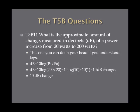What is the approximate change in decibels of a power increase from 20 watts to 200 watts? Using the same formula: dB = 10 × log(P1 / P0), with P0 = 20 W and P1 = 200 W: dB = 10 × log(200/20) = 10 × log(10) = 10 × 1 = 10 decibels. The answer is a 10 decibel change.